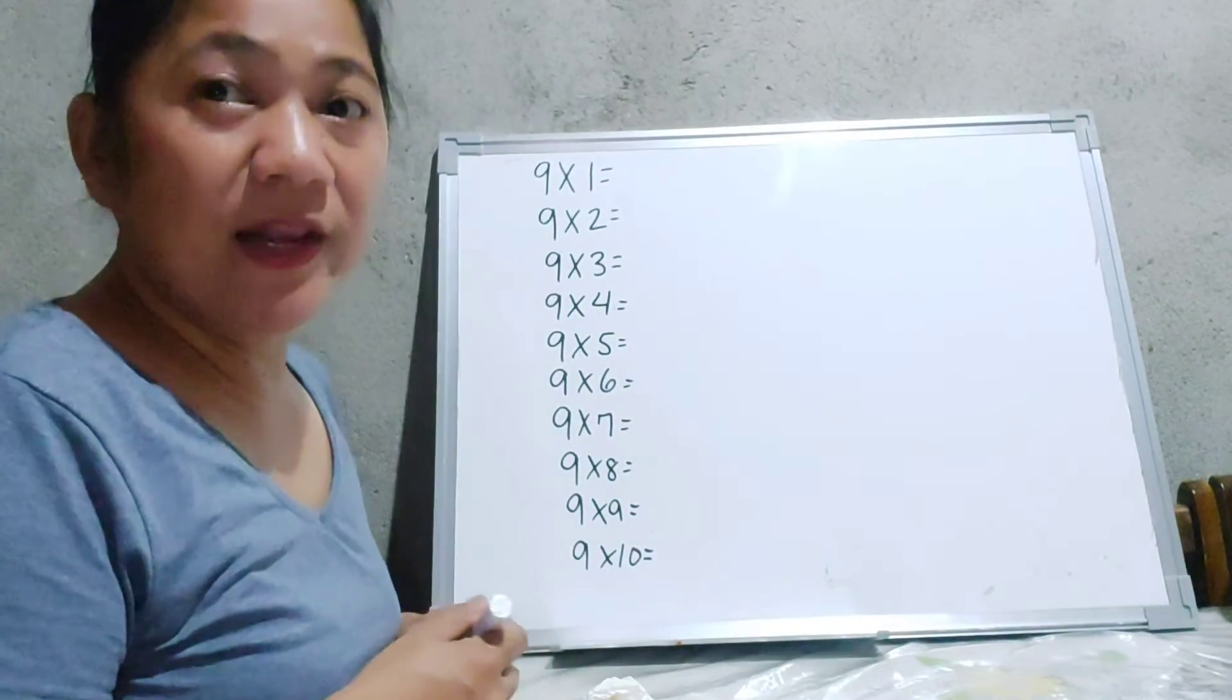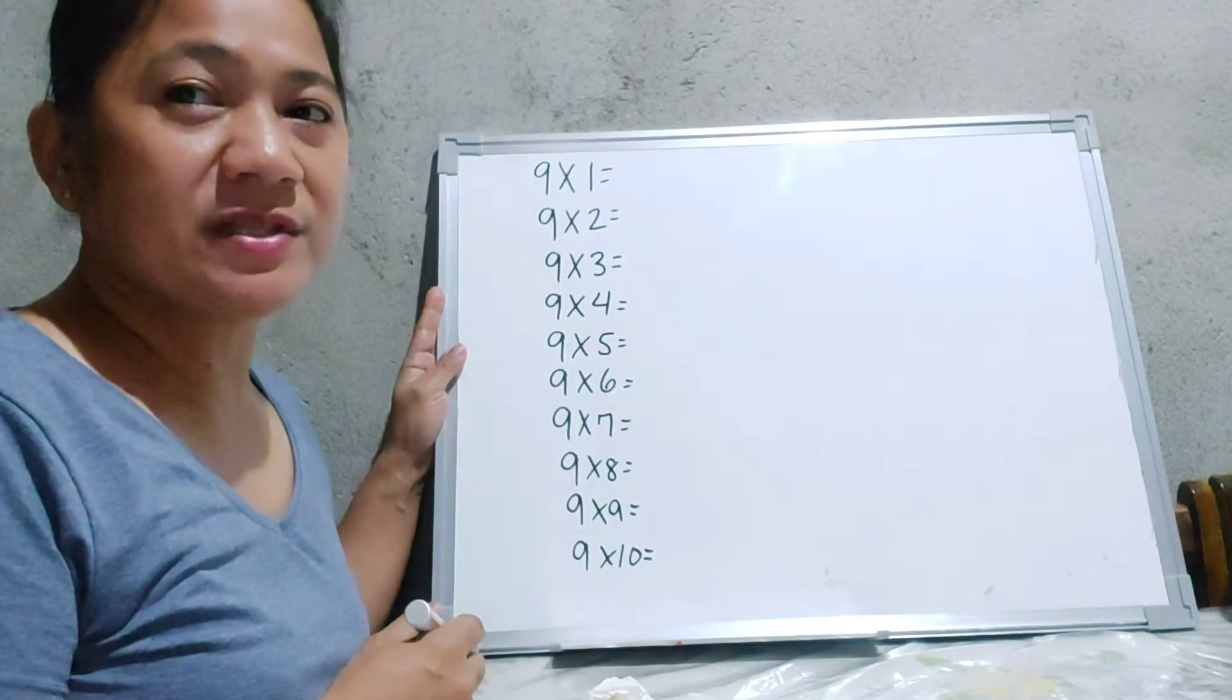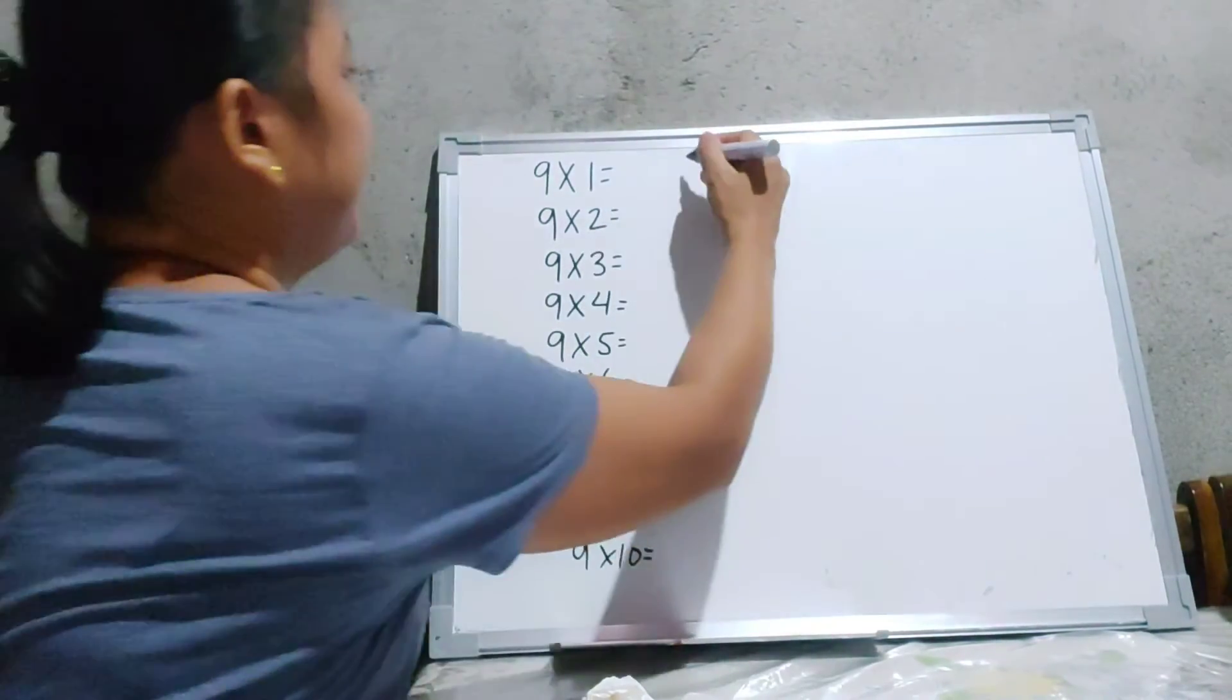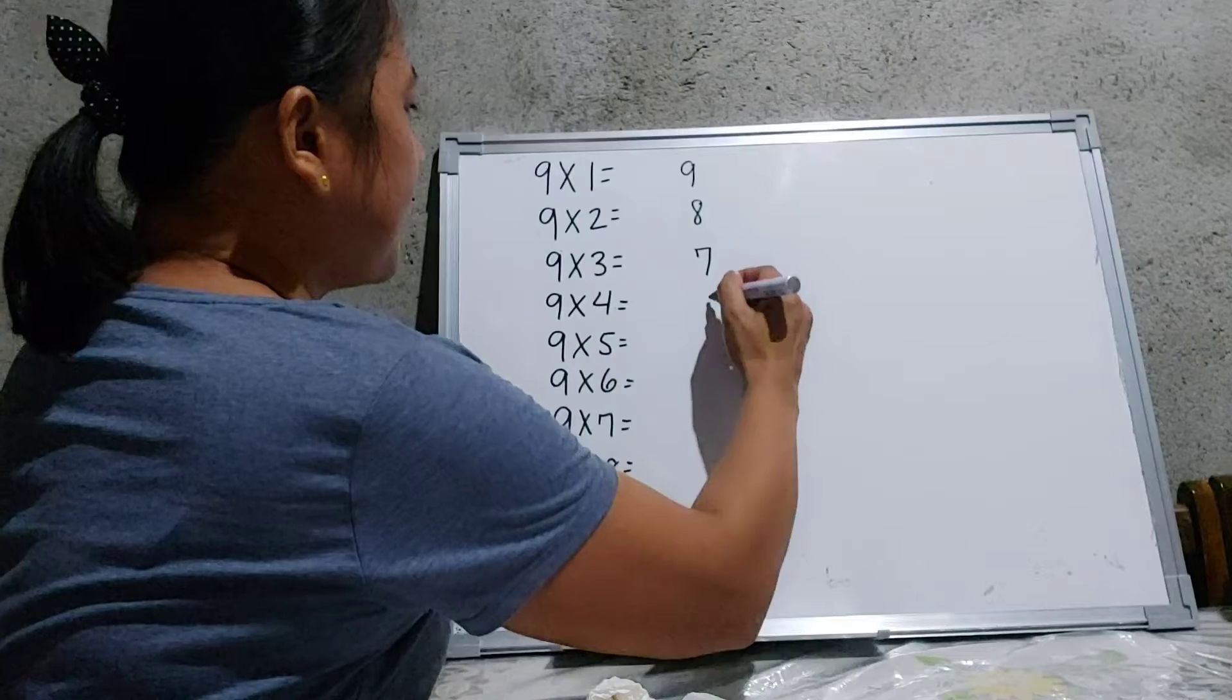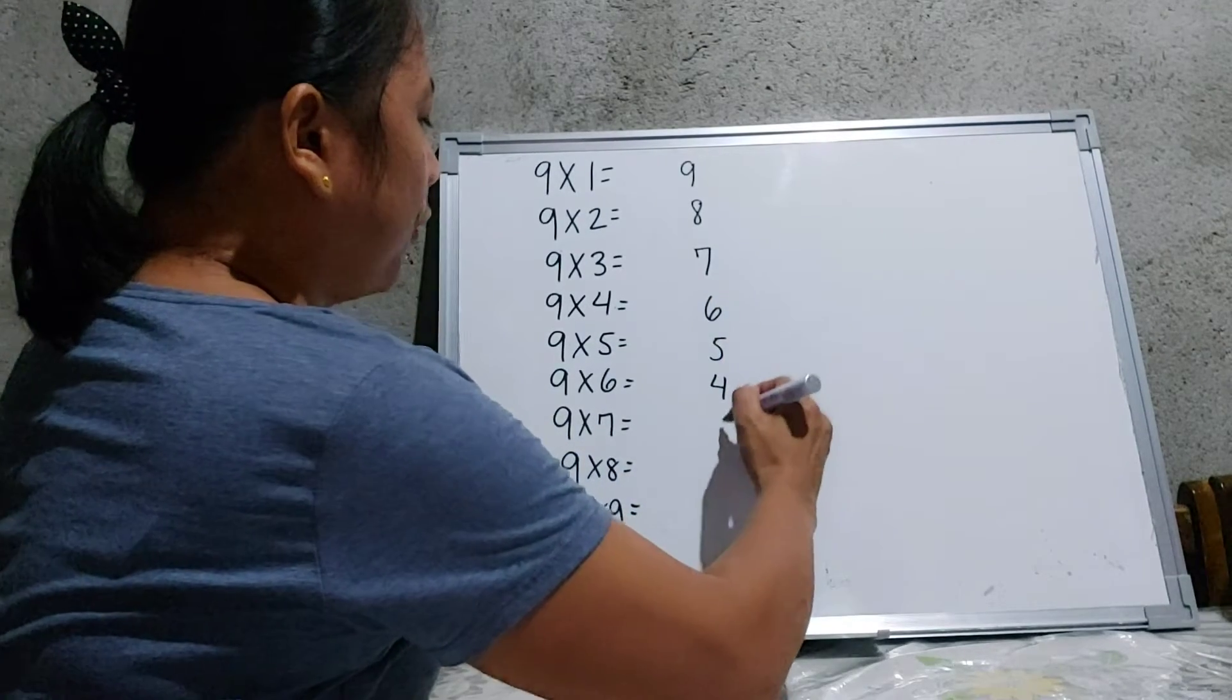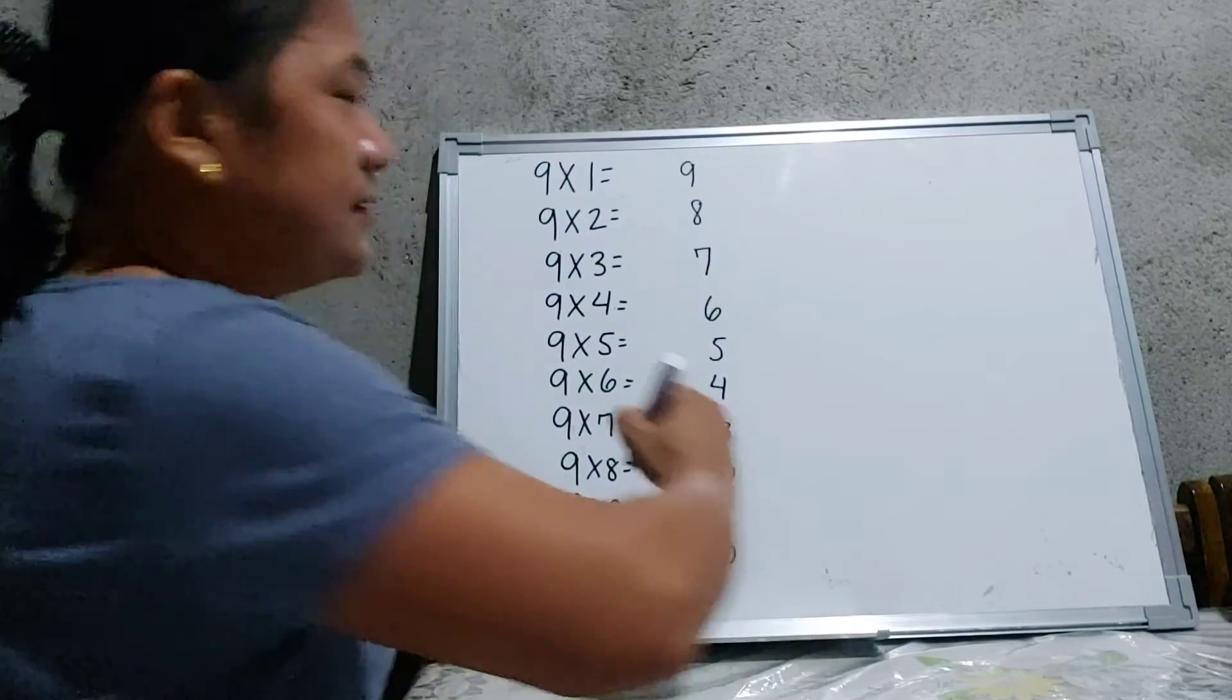So let us find the product of this given table by writing down the numbers from 9 to 0 in the descending form. So we have, in the ones value, we have 9, 8, 7, 6, 5, 4, 3, 2, 1, and 0.